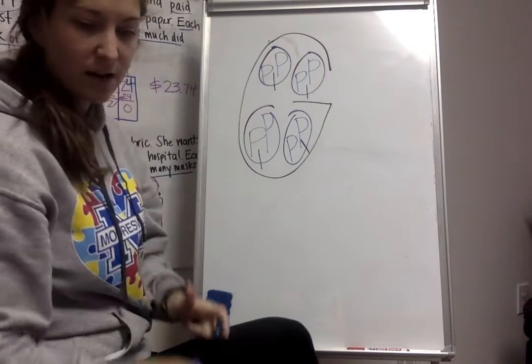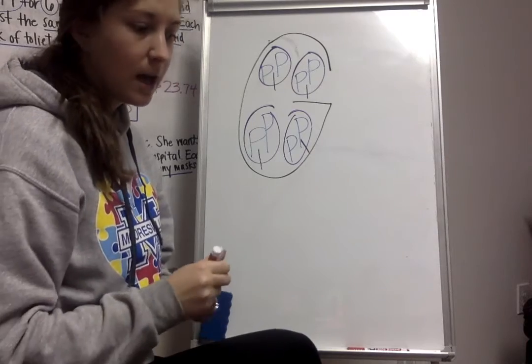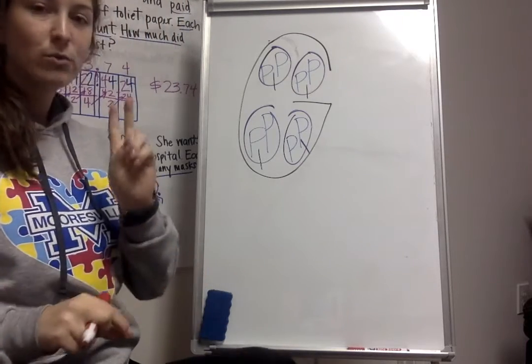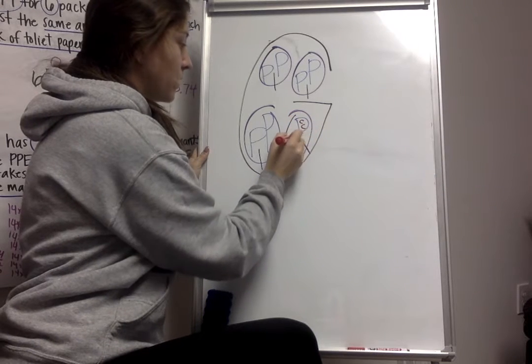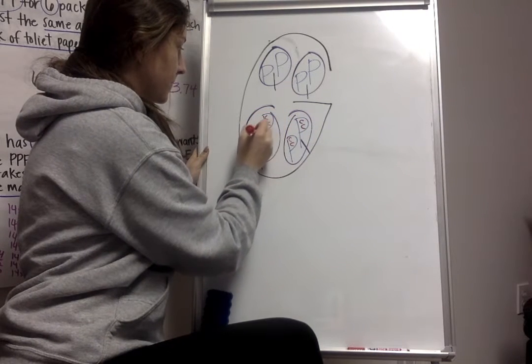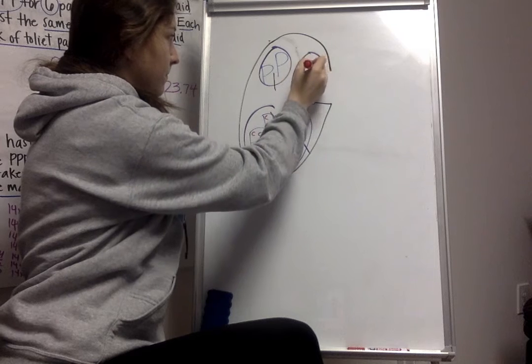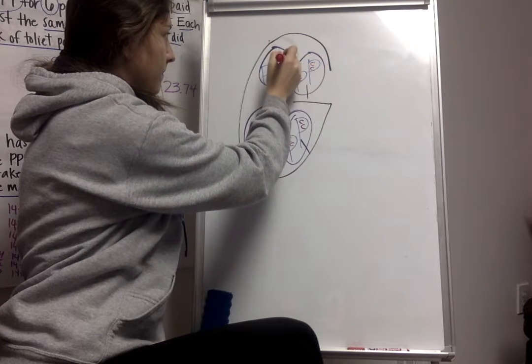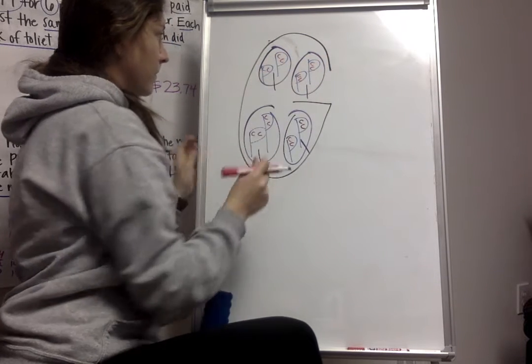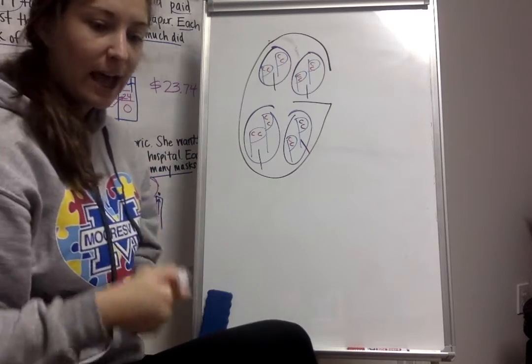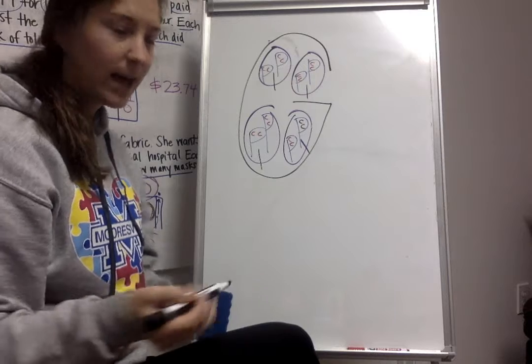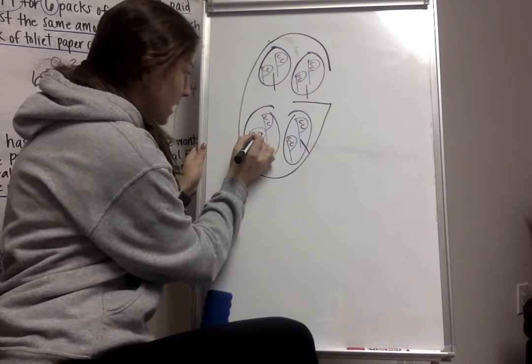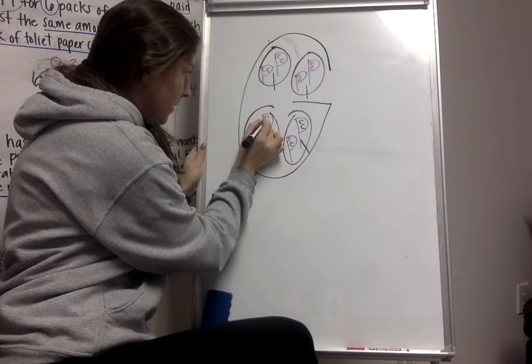And then inside of each of my Ps, I'm going to have two Cs for cups. So two cups equals one pint. So there's my two Cs. And then in between each of those Cs, I'm going to put a little eight, and that means that eight fluid ounces are inside of each cup.